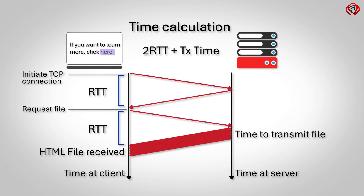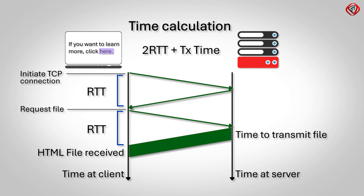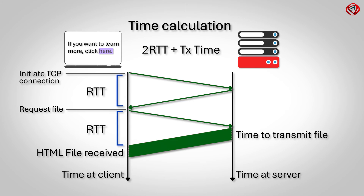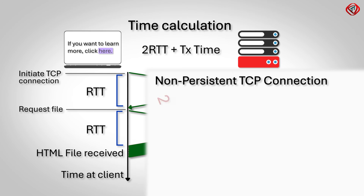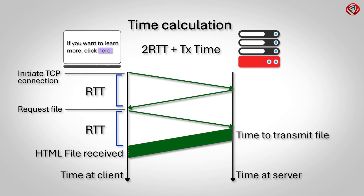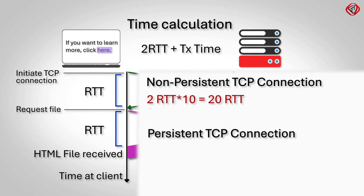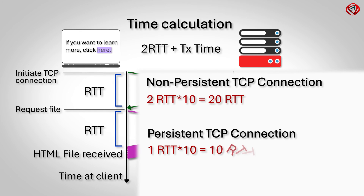The HTML file received is pointing to 10 images on the same server. Assuming no parallel TCP connections, in a non-persistent TCP connection this process is repeated for each image because a separate TCP connection is required for each image. Therefore, the total RTT required to receive 10 images is 2 RTT multiplied by 10, which is 20 RTT. In persistent TCP connections, the images are shared over the existing TCP connection, so only the request-response path is repeated 10 times. Therefore, the total RTT required to receive 10 images is 1 RTT multiplied by 10, which is 10 RTT.